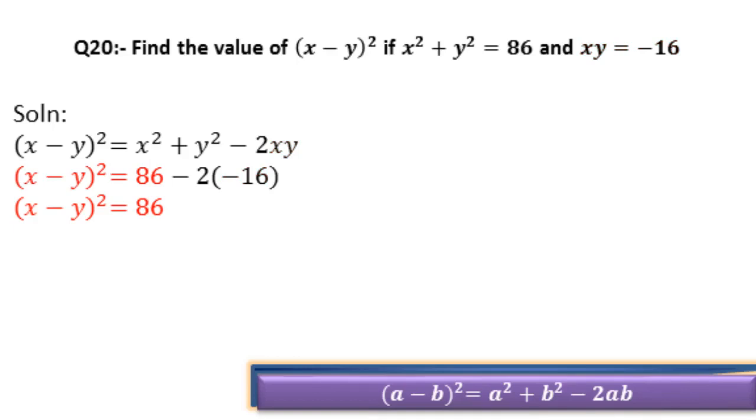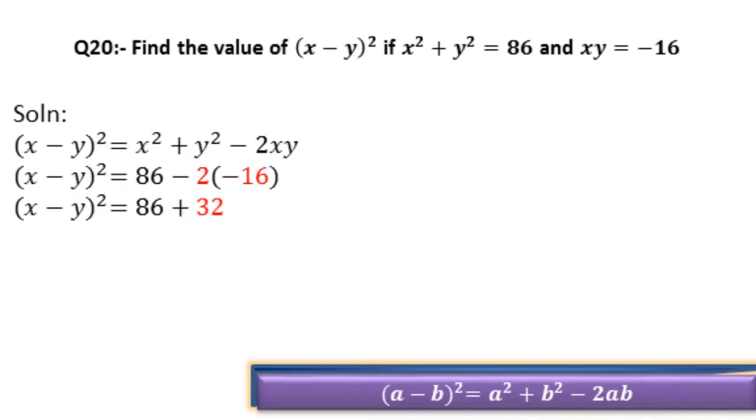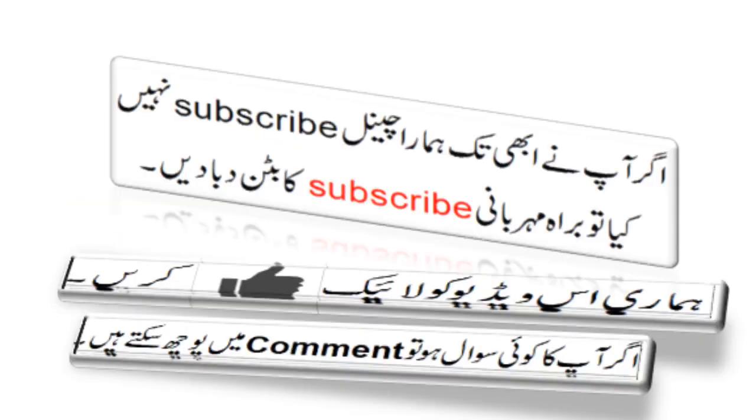(x - y)² = 86 - 2(-16). Minus multiplied with minus becomes plus, as shown in additional details here. 2 multiplied with 16 becomes 32. So (x - y)² = 86 + 32 = 118. Hence this is our answer.